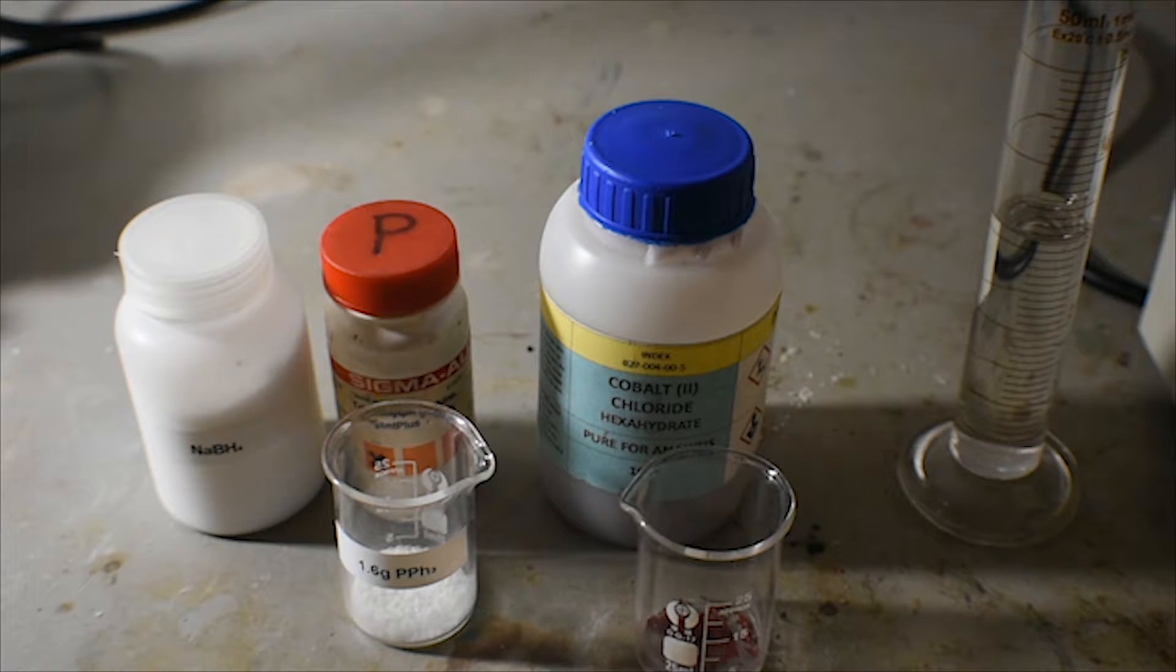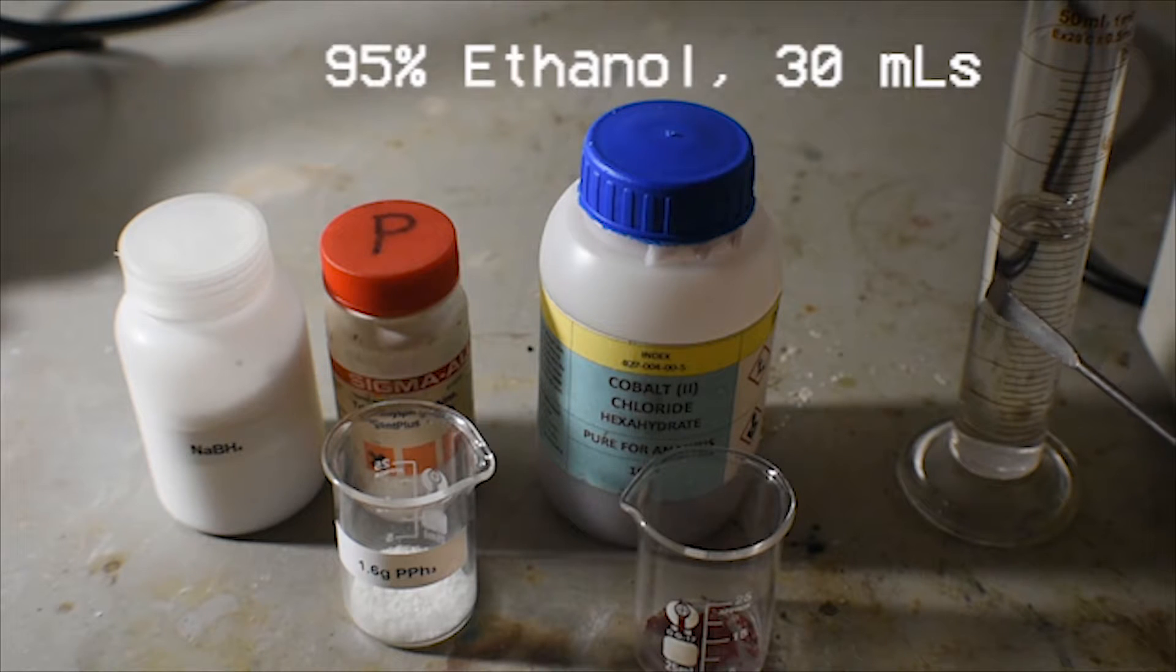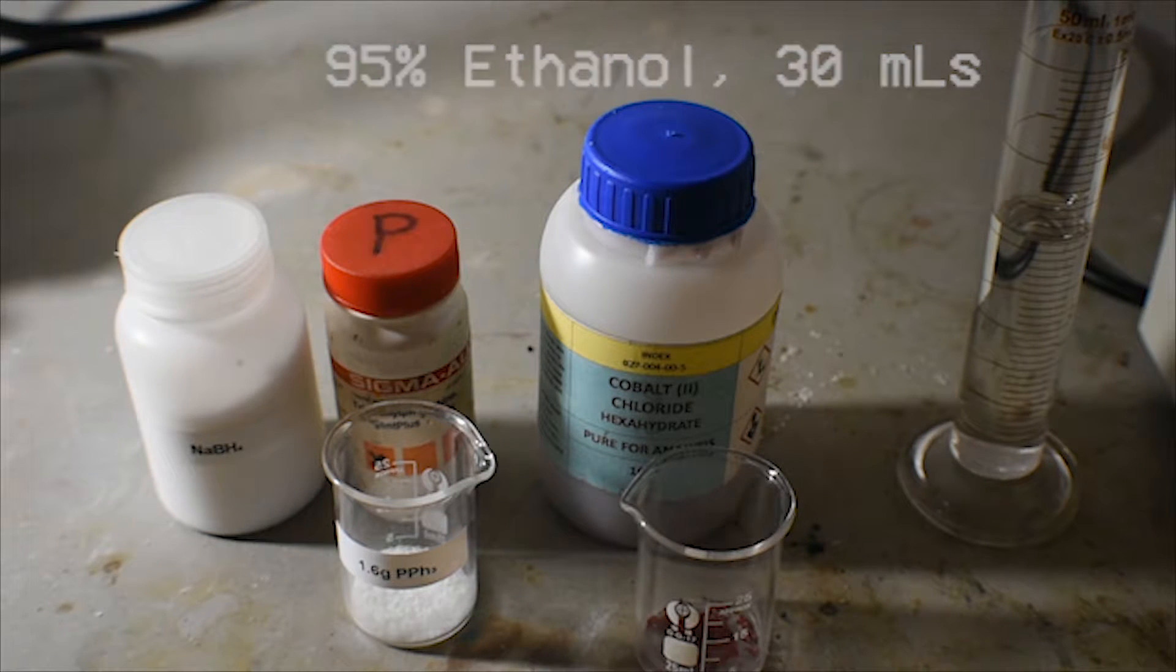As the solvent for the reaction, I'm going to use 30 milliliters of denatured ethanol. This is about 95% ethanol or greater. We want to exclude water for this synthesis, as it can mess things up a little bit. So let's get to the first step, which entails dissolving both the triphenylphosphine and cobalt-2 chloride hexahydrate in hot ethanol.